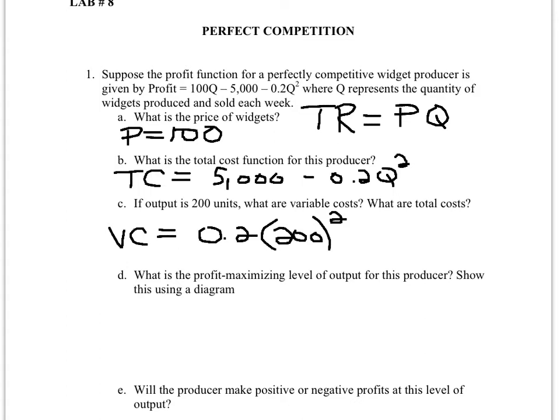Part D asks: what is the profit-maximizing level of output for this producer? There are two ways to go about it. We know that when the producer maximizes profit, marginal revenue equals marginal cost. If revenue and cost changes are the same, then marginal profits equal zero. So we take the derivative of the profit equation and set it equal to zero to find the answer.